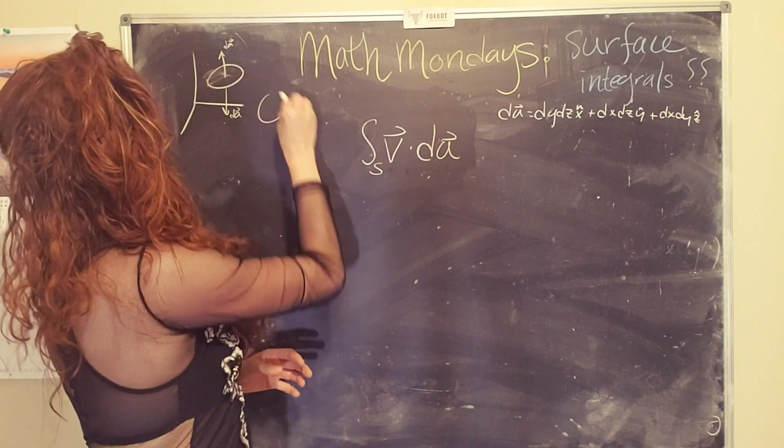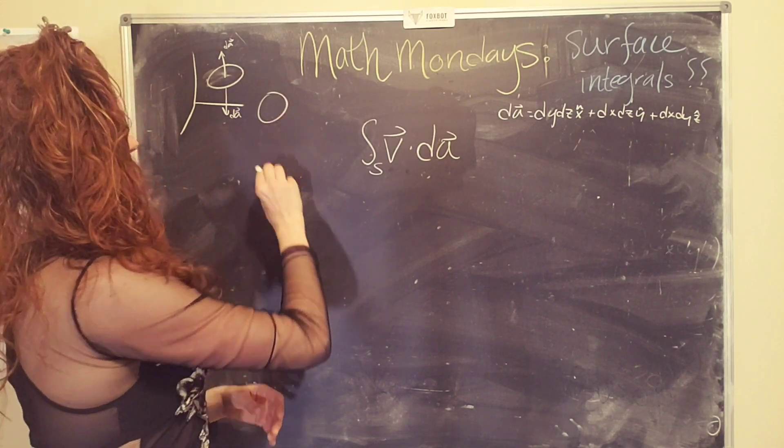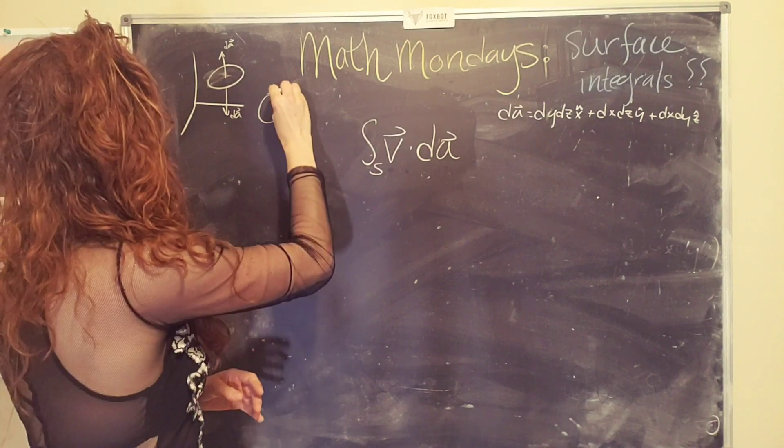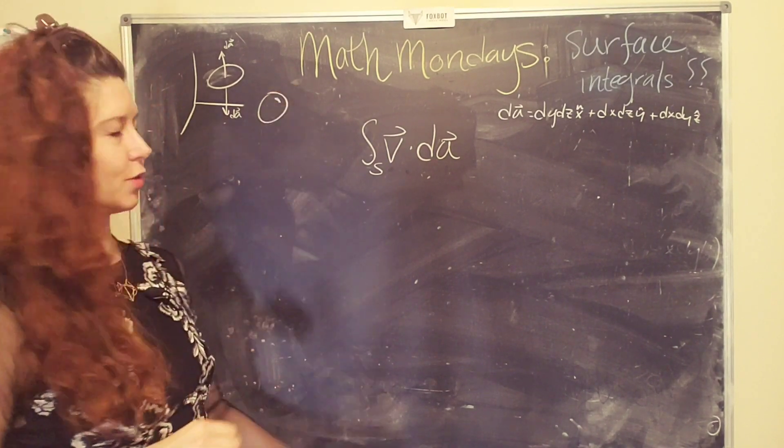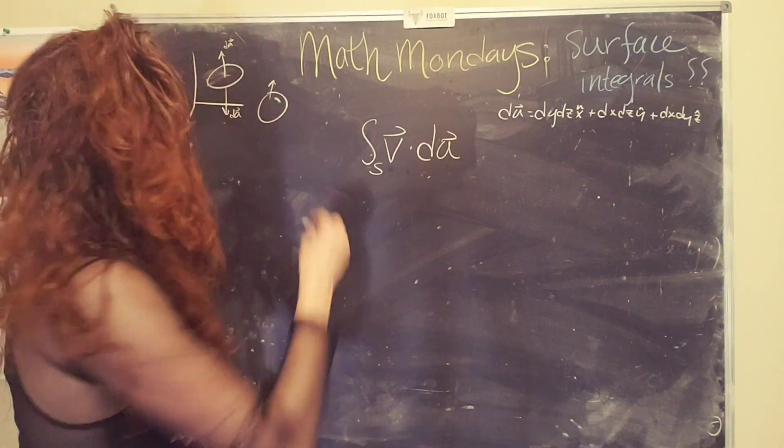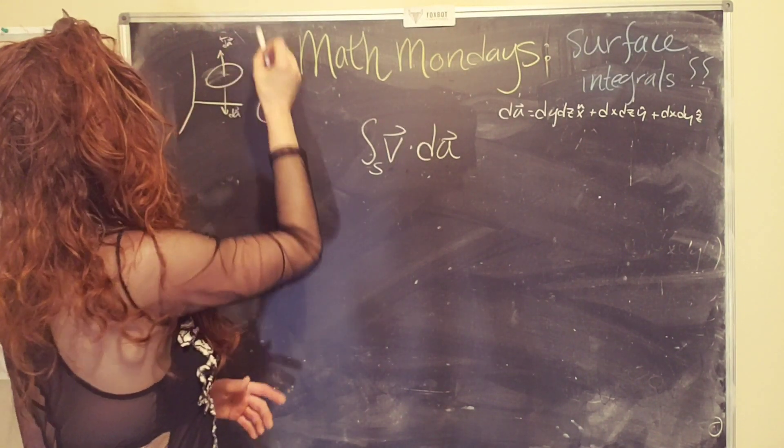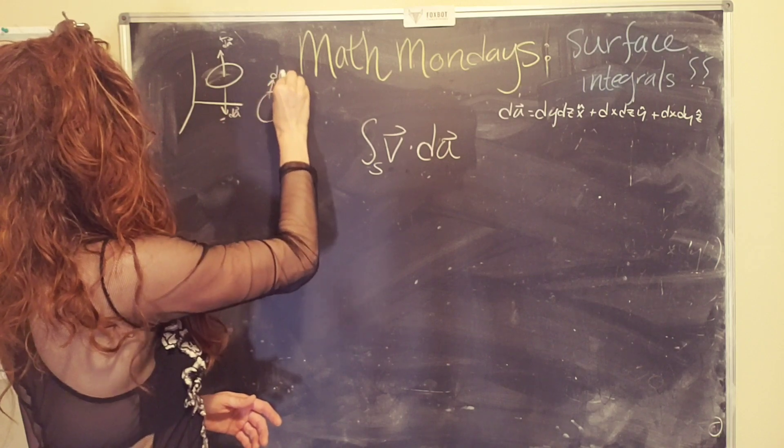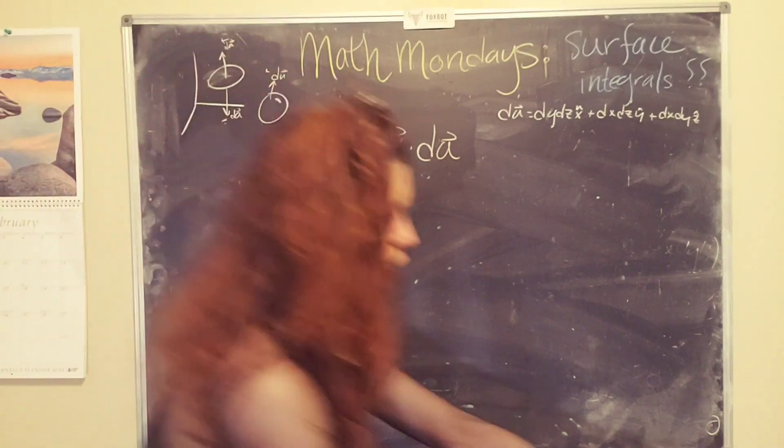If you have a closed surface like a balloon or something, pretend that's three-dimensional. Oh look, oh now it's three-dimensional because they added a little bubble thing. Usually it's defined that dA is positive outwards and negative inwards. So you could say that this is positive and this is negative, and then this would be positive. Cool. Okay.